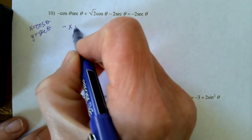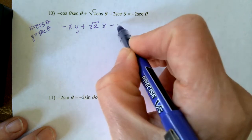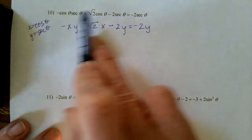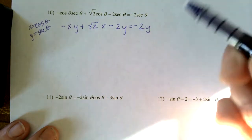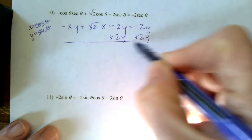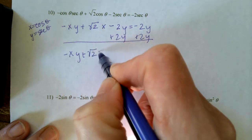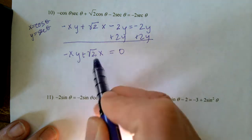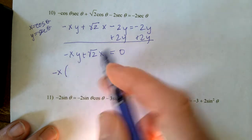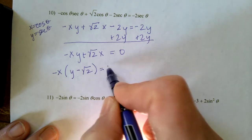So in this one, maybe I'd say x is the cosine of theta and y is the secant of theta. This would become negative xy plus the square root of 2 times x minus 2y equals negative 2y. Once I'm here, I can start to solve. I'm going to get everything on one side by adding the 2y over. This is just algebra here. That leaves me with negative xy plus the square root of 2x equals zero. And then I can factor an x out. In fact, I'm going to factor a negative x out because each term has an x.